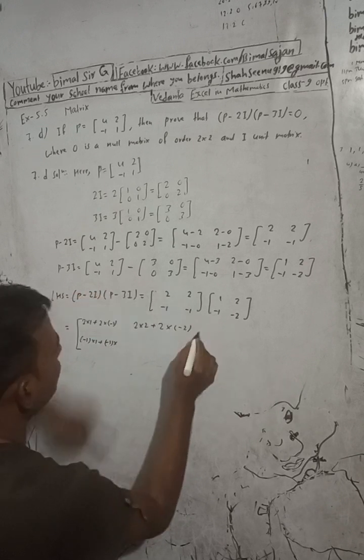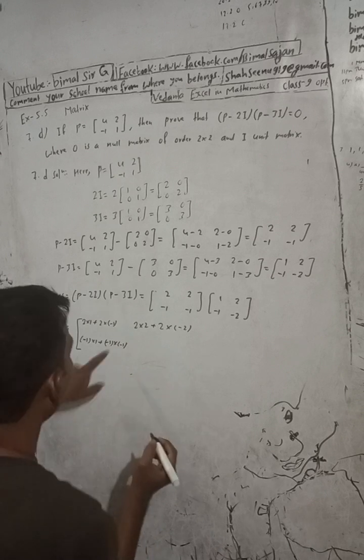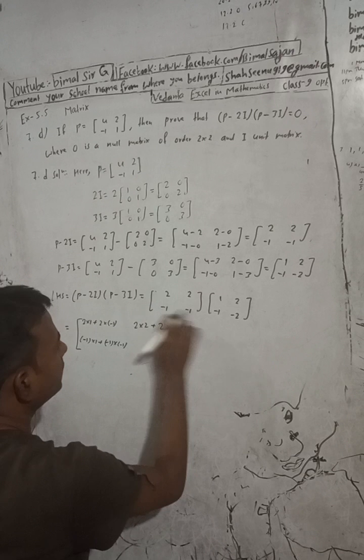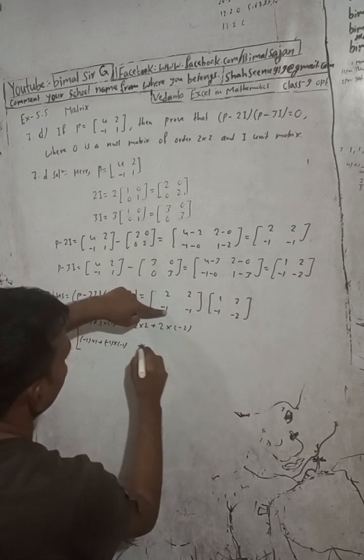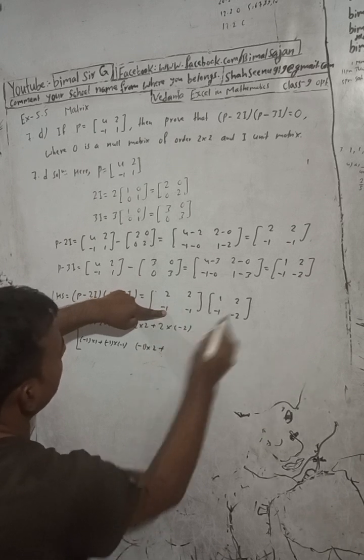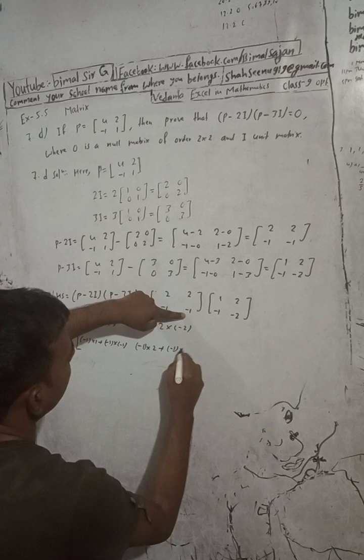Minus 1 into minus 1, then minus 1 into 2. After this, the second row and second column: minus 1 into 2 plus minus 1 into minus 2.